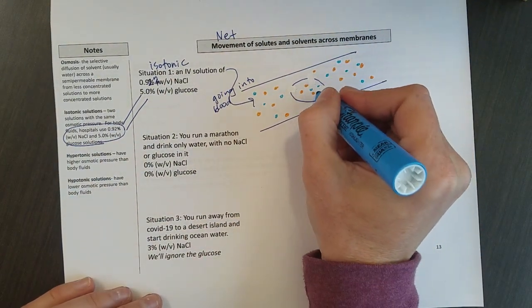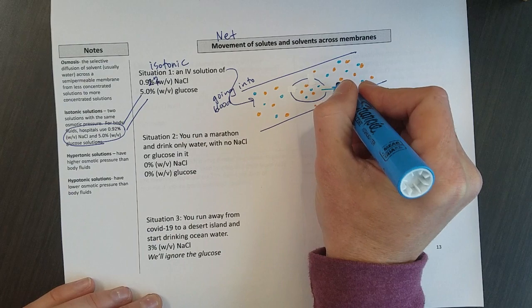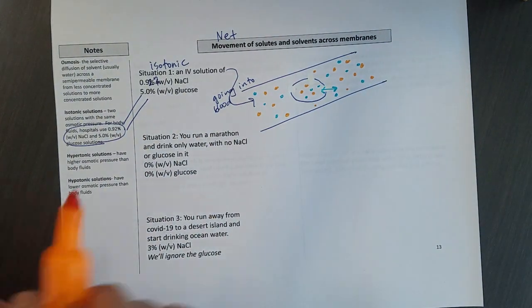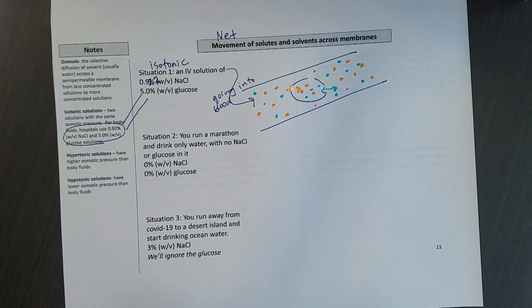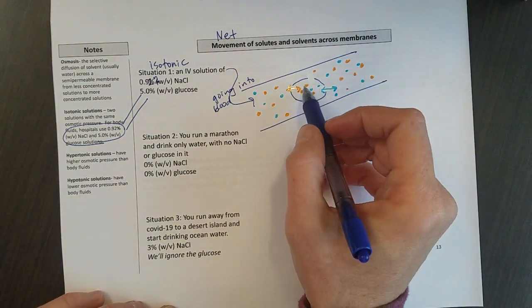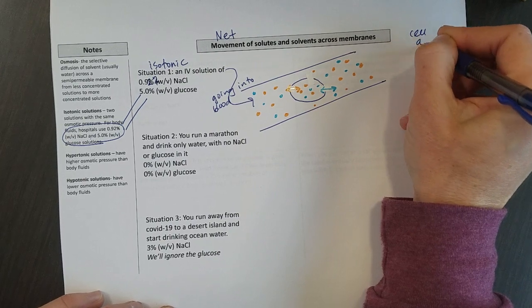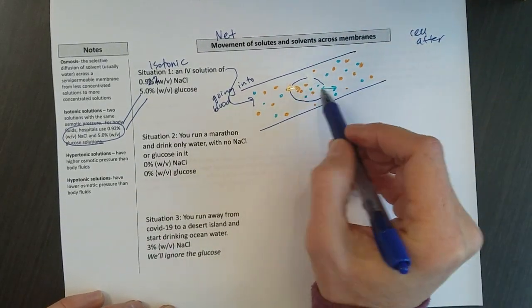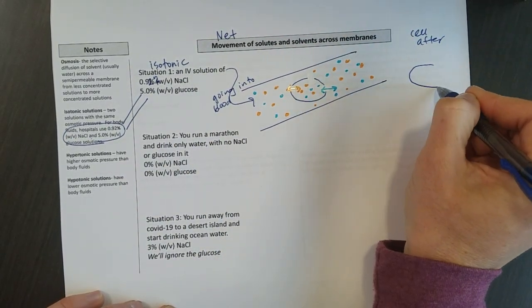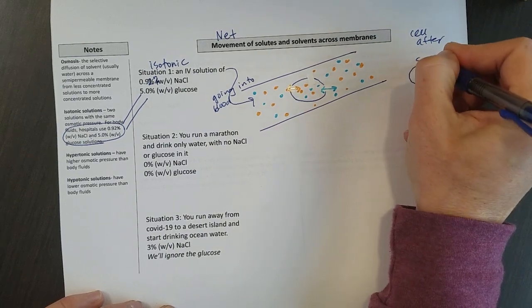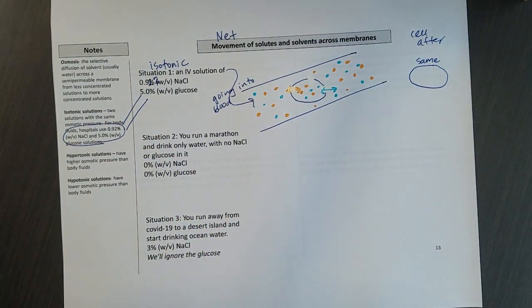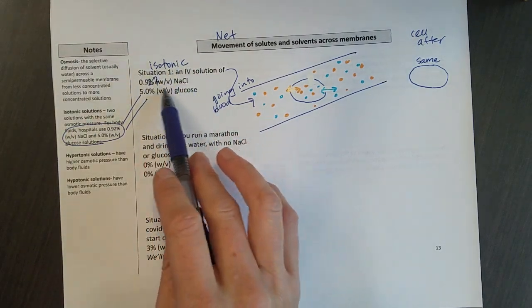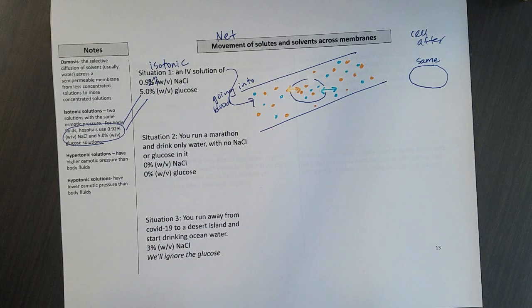And that means that I've got water moving in and out, and I've got solutes moving in and out, and everything stays balanced. So if your cell sits in this solution for a while, the cell will remain exactly the same size. So that is ideal if they're just wanting to hook you up to an IV so they can add a drug to it or a painkiller or something. They would use isotonic solutions so that they don't change your cells at all.